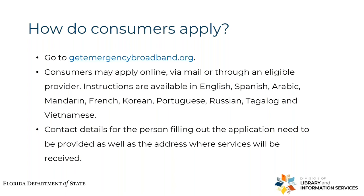How do consumers apply? The URL getemergencybroadband.org is the portal through which consumers can access the application as well as all sorts of instructions — and if you're interested in bringing this to your patrons, it's a great source of information. They can apply online, send in a paper mail application, or apply through their provider. The instructions are available in about 11 languages, although the application itself is only available in English and Spanish — a gap worth being aware of.